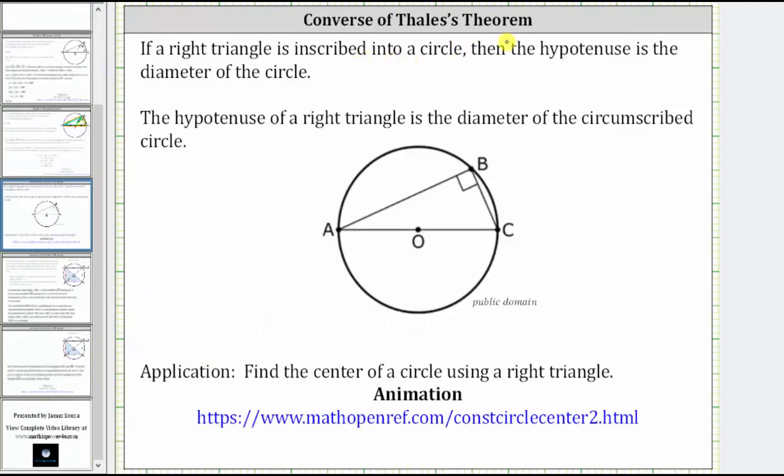And the converse of Thales' Theorem is if a right triangle is inscribed in a circle as pictured below, right triangle ABC is inscribed in the circle, then the hypotenuse is the diameter of the circle. We can also say the hypotenuse of a right triangle is the diameter of a circumscribed circle.